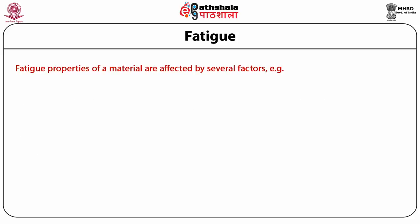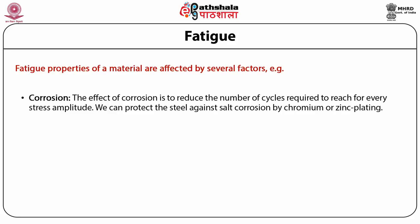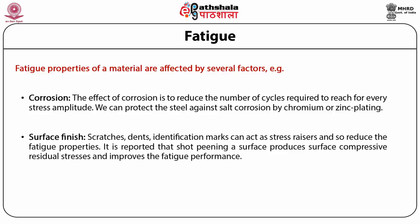Fatigue properties of a material are affected by several factors. The first factor is corrosion — it reduces the number of cycles required to reach failure for every stress amplitude. Steel can be protected against salt corrosion by chromium or zinc plating. The second factor is surface finish. Scratches, dents, and identification marks can act as stress raisers and reduce fatigue properties. Shot peening a surface produces surface compressive residual stresses and improves fatigue performance.